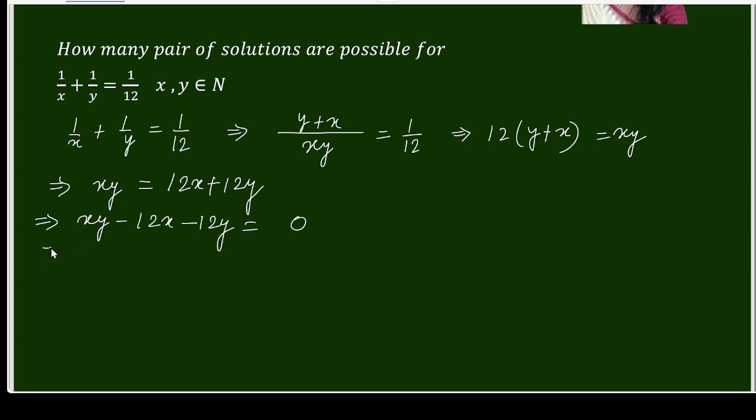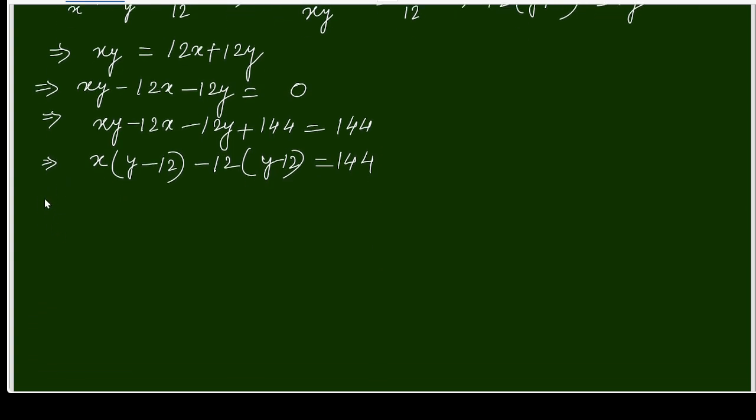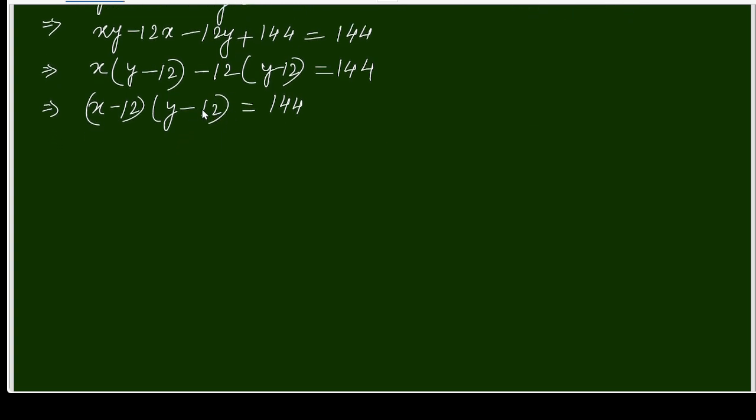Shifting to one side, xy minus 12x minus 12y equals 0. To make the left side as factors, I will add 144 to both sides of the equation. Next, on the left side I will take x common, getting x(y - 12) minus 12(y - 12) equals 144. So (x - 12)(y - 12) equals 144.